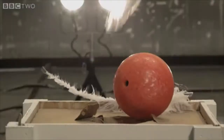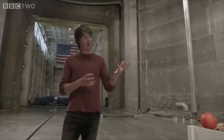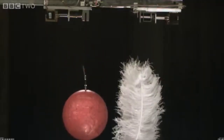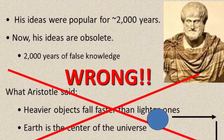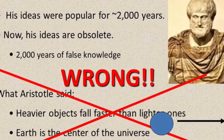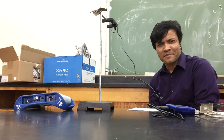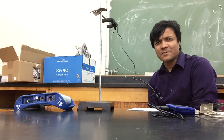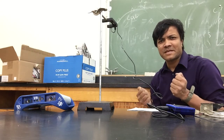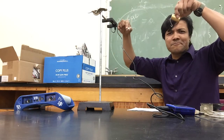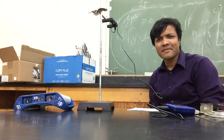In this case, the feather fell to the ground at a slower rate than the bowling ball because of air resistance — we have to remove the air. 2000 years later, Galileo did the same experiment. He dropped a rock and a feather and he realized that they both fall at the same time.